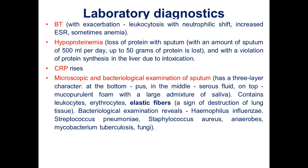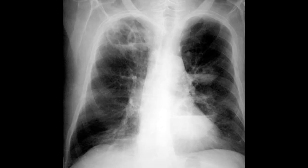With an amount of sputum of 500 milliliters per day, up to 50 grams of protein is lost. Hypoproteinemia is also connected with violation of protein synthesis in the liver due to intoxication. Increased levels of C-reactive protein and other inflammation markers are found. Microscopically and bacteriologically, examination of sputum shows leukocytes, erythrocytes (RBCs), and elastic fibers — representative of destruction of lung tissue. Bacteriological examination reveals pathogens.